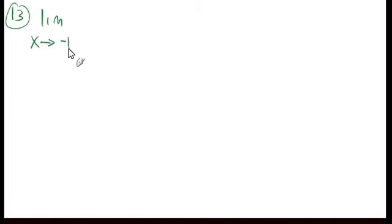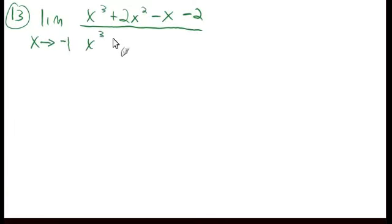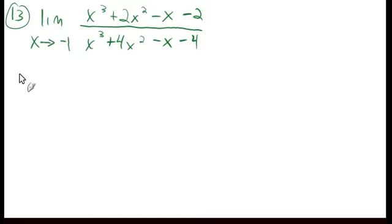Now we'll do number 13. We want the limit as x approaches negative 1 of x cubed plus 2x squared minus x minus 2 over x cubed plus 4x squared. If we try to put negative 1 in here, we'll find that we get a 0 in the denominator, which we can't have. So we're going to try to factor this and have stuff cancel.